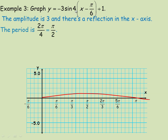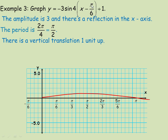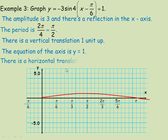The period is 2 pi divided by 4, and since 2 divides into 4 twice, the period is pi over 2 — a fairly short period. There's a vertical translation of 1 up, that's the plus 1, so the axis through the middle is at y equals 1. The x minus pi over 6 is a horizontal translation — a phase shift of pi over 6 to the right.